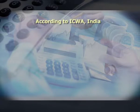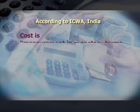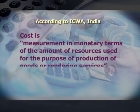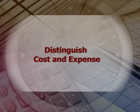According to ICWA India, cost is measurement in monetary terms — in terms of the amount of resources used for the purpose of production of goods or rendering services. The term cost and expense are often confused, so let us distinguish between cost and expense. An expense is a cost that has expired or was necessary in order to earn revenues.